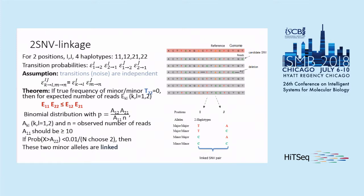The main idea of 2SNV, which we then generalize, is very simple. If we have aligned all reads together, we will see that if two minor alleles co-occur very frequently, something is wrong — they are not supposed to co-occur if they are errors. So we want to distinguish errors from real haplotypes. I proved a theorem — a two-page proof involving multiplications and additions — from which a very interesting result follows.